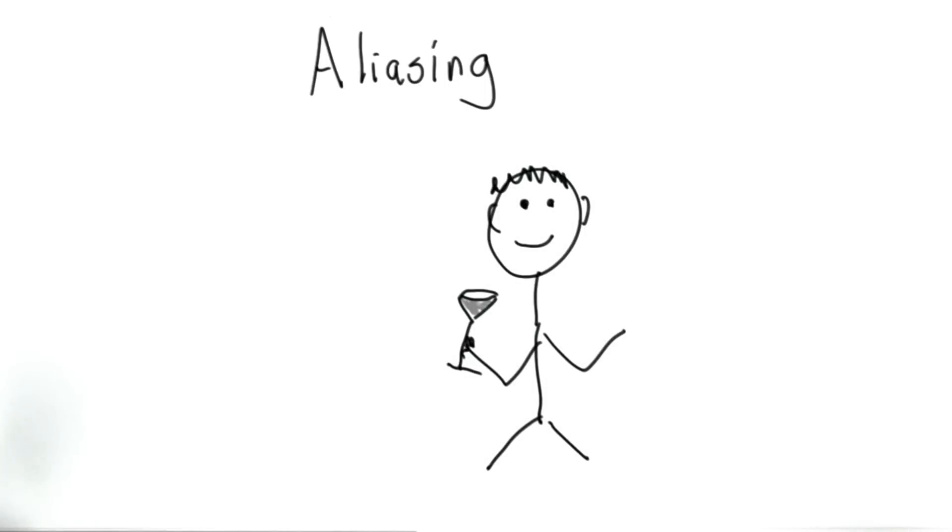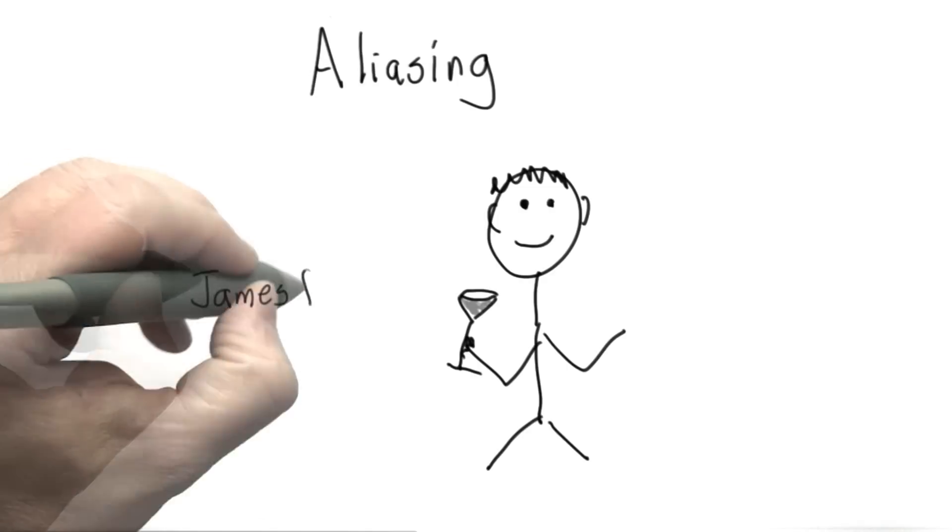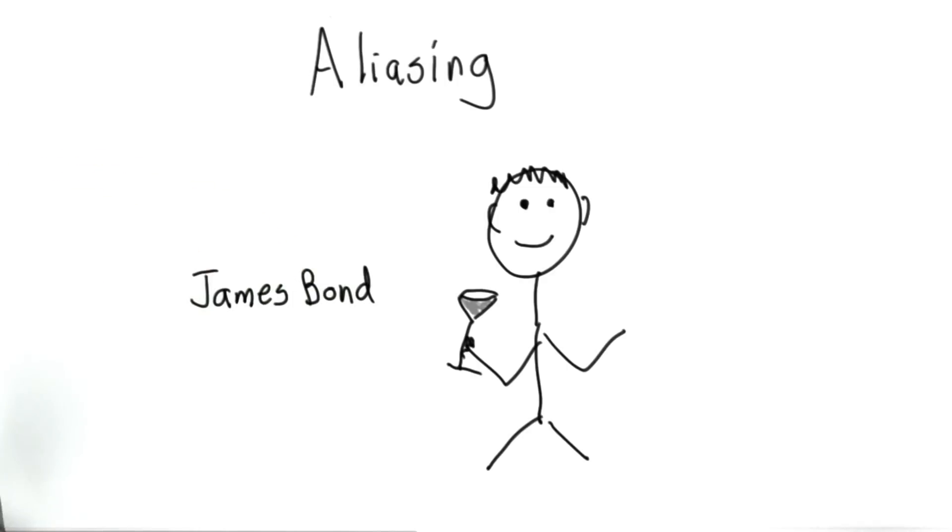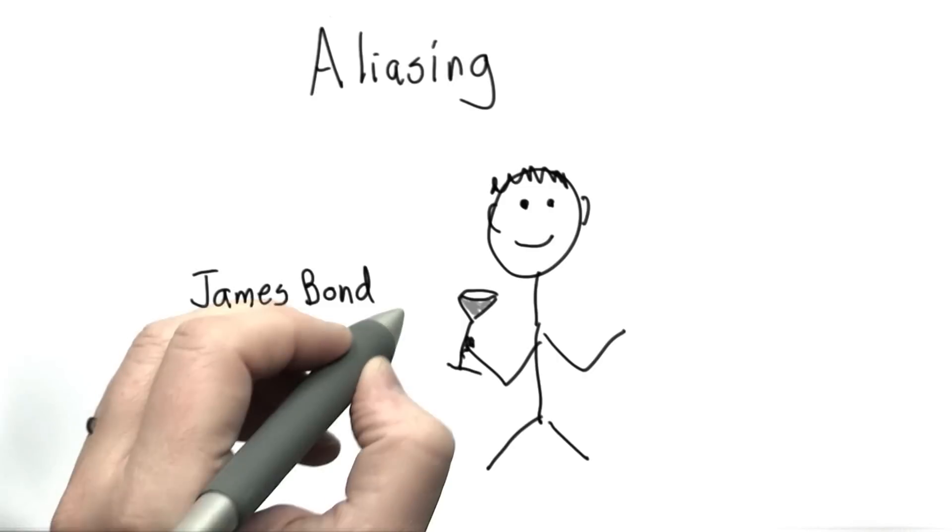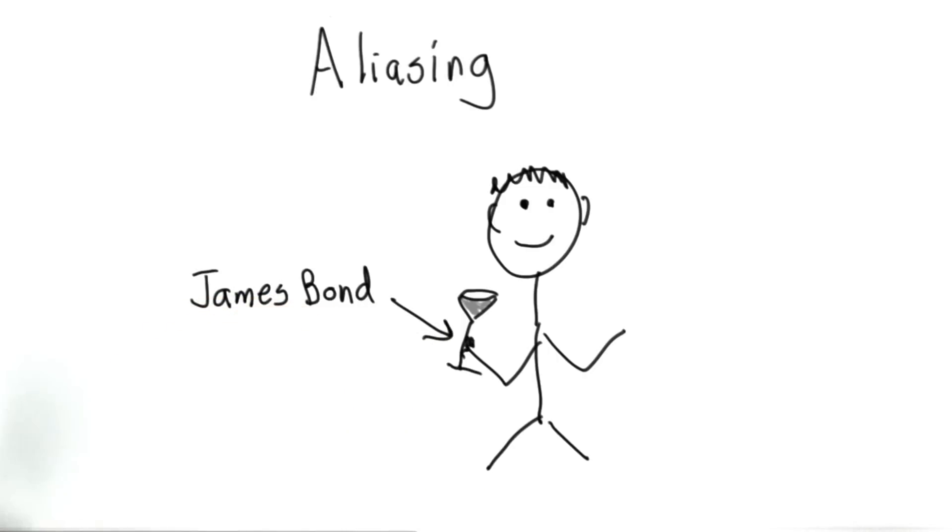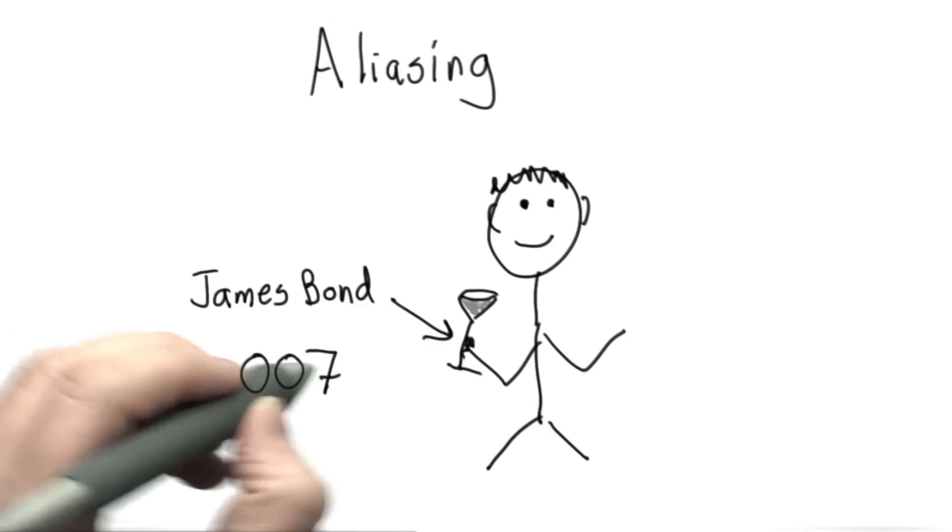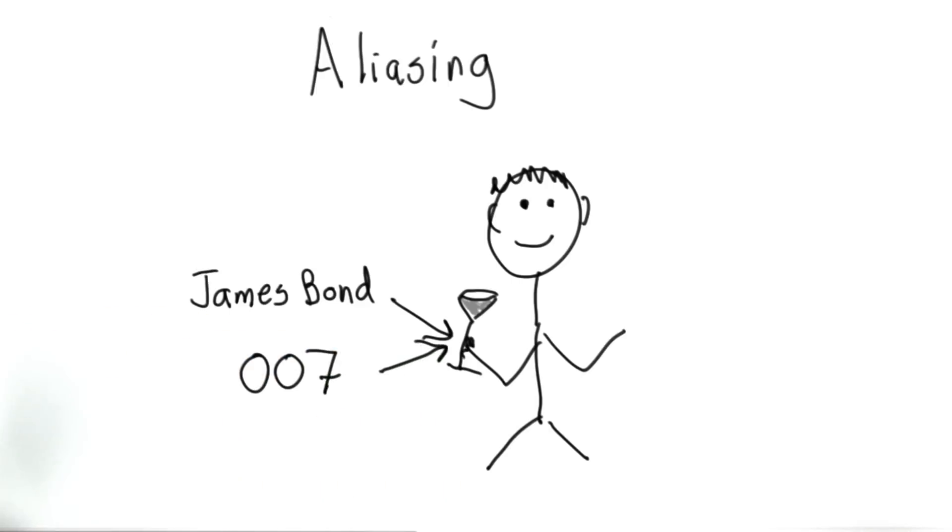Aliasing in programs is similar to the way we think about aliasing in spycraft. You might not be able to tell from my drawing, but this is James Bond. We can refer to James Bond either by his name, James Bond, or by his spy name, 007. Both of those are ways to refer to the same person.